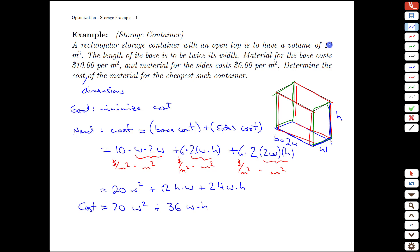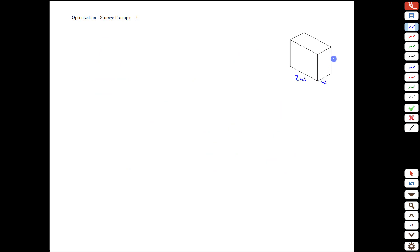The key to that is going to be this statement here. The volume of the container has to be 10 cubic meters. We're going to bring that back to our dimensions here. And that's going to give us a way to relate w and h if we have that target volume. Quickly resketching our dimensions here.